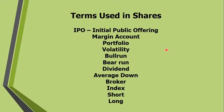A bull run is a sustained increase in the price of shares or in the price of a market for shares. A bear run is the opposite of a bull run — here you have a sustained decrease in the prices of assets or shares on a particular exchange.